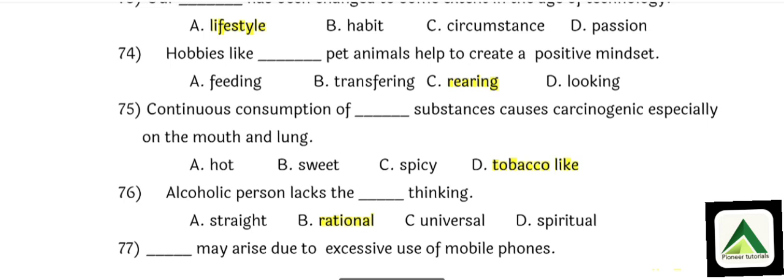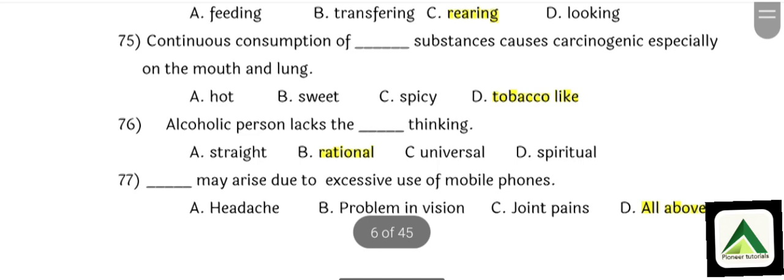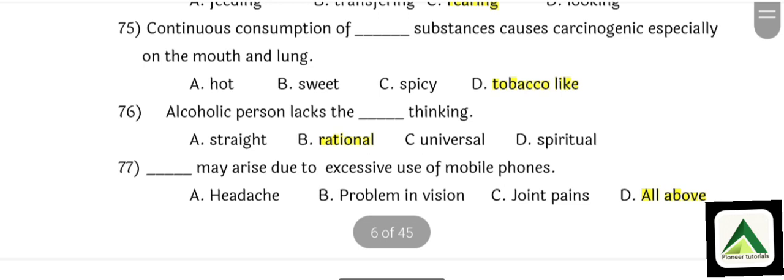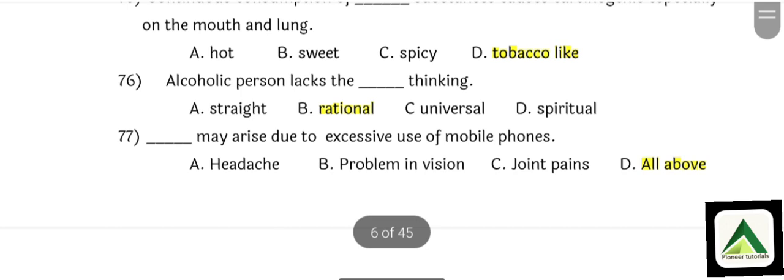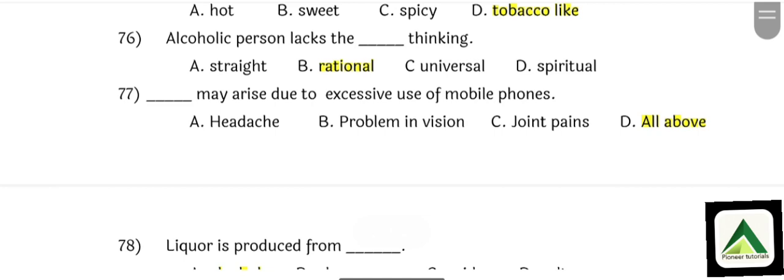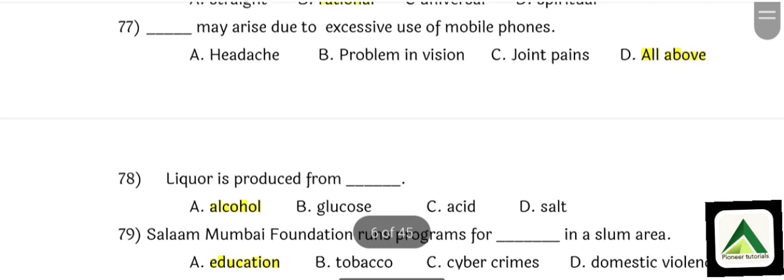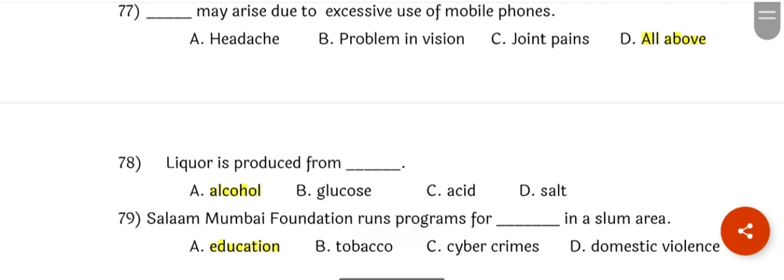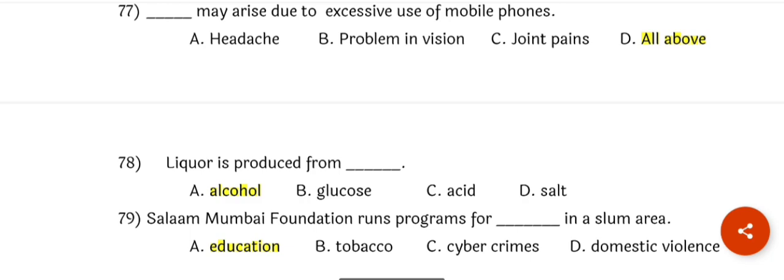Question number 76: An alcoholic person lacks rational thinking. Option number B: Rational. Question number 77: Headache, problem in vision, and joint pains may arise due to excessive use of mobile phones. That is option number D: All of the above. Question number 78: Liquor is produced from option number A: Alcohol. Question number 79: Salam Mumbai Foundation runs an educational program in slum areas. That is option number A: Educational.